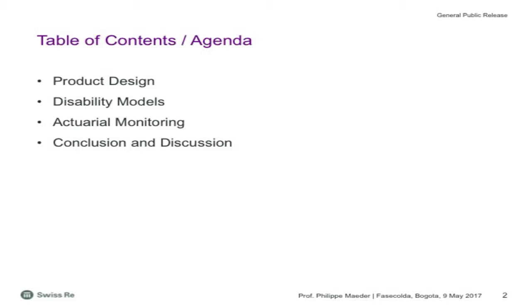I'll follow this agenda. When we talk about death or mortality covers, that's a rather clear notion, but when we talk about disability, much less so. I will start with some reminders about product and definition characteristics. Then I'll present some disability models or model families. As models need to be checked for accuracy with monitoring, I'll also give some hints about disability monitoring, and we'll try to reach conclusions.